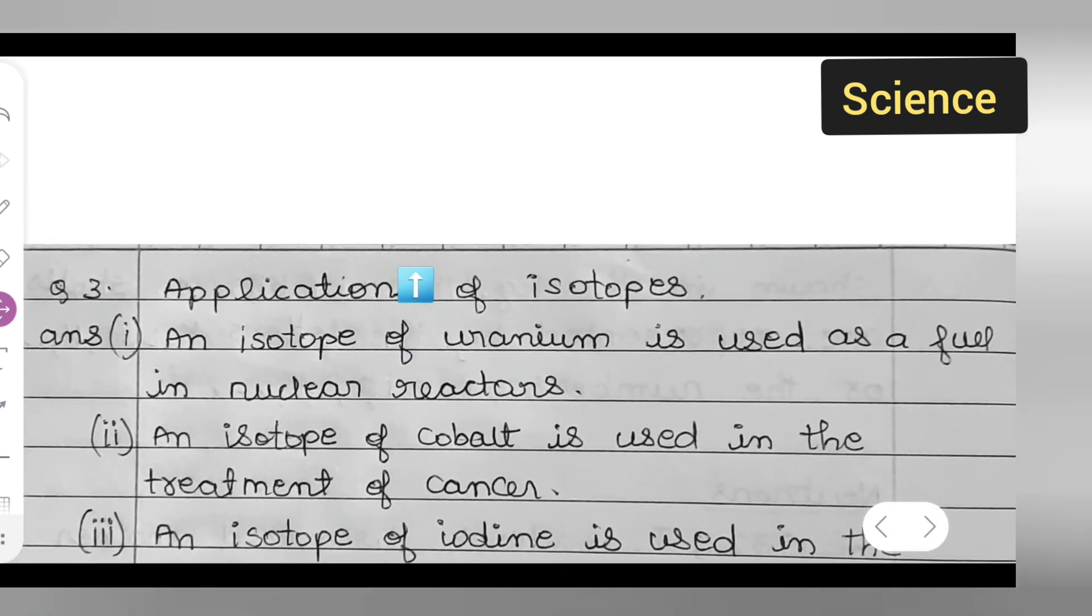Applications of isotopes. Write down here are some applications. First one is an isotope of uranium is used as a fuel in nuclear reactors.